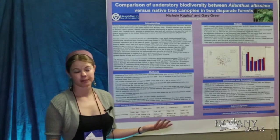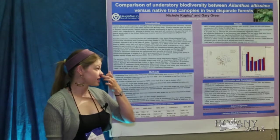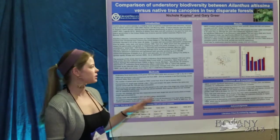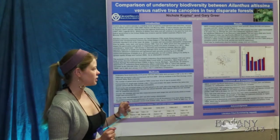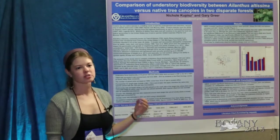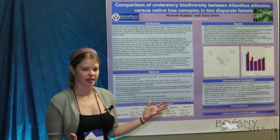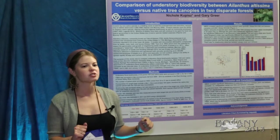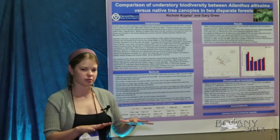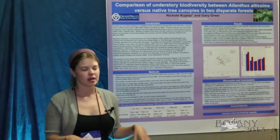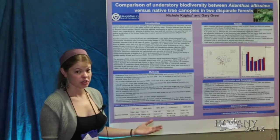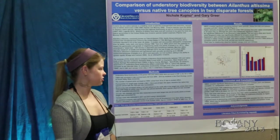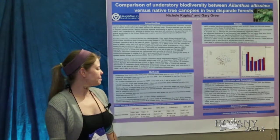Since Tree of Heaven has allelopathic tendencies, I expected it wouldn't allow as many species in the understory. But what we found is that Tree of Heaven actually had more species in its understory, most likely due to suppression of competition. The allelopathic chemicals released by Ailanthus are probably at low enough concentrations that they only prevent a couple of species from dominating.